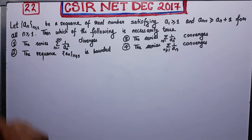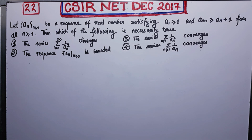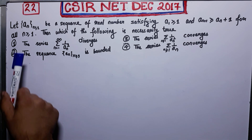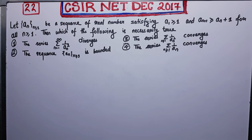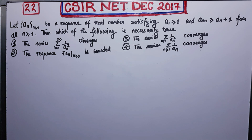It says: let a_n be a sequence of real numbers satisfying these two conditions for all n greater than or equal to one. Then which of the following is necessarily true? Option 1 says the series summation 1 over n² diverges. Option 3 says summation 1 over n² converges. Option 2 says the sequence a_n is bounded. Option 4 says the series summation 1 over a_n converges.